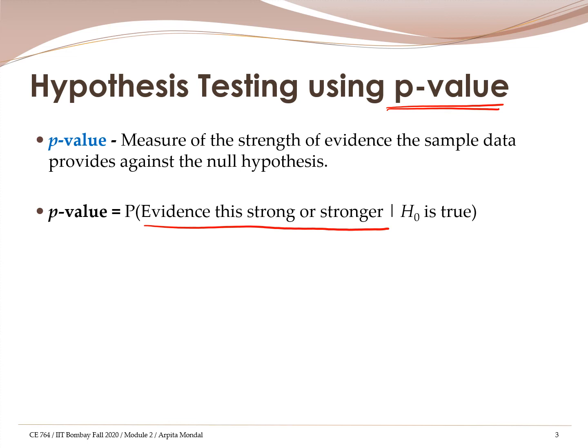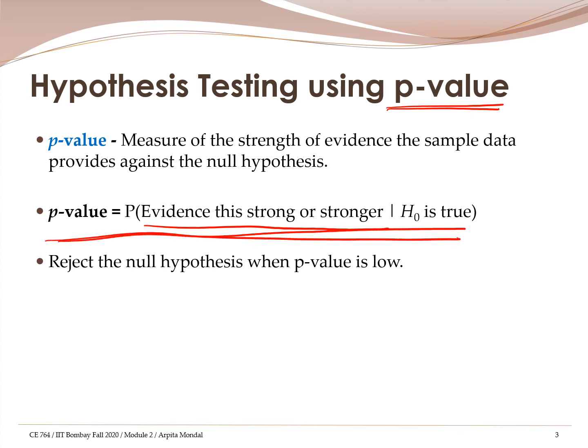Assuming — conditional on the null hypothesis being true — what is the probability of observing data as extreme as you have observed? That is the definition of p-value. We are trying to see if we have evidence to reject the null hypothesis or not. Should you reject the null hypothesis for a large p-value or a small p-value? The answer is: reject the null hypothesis when the p-value is low. This is intuitive because the p-value tells us how likely it is to observe data like ours if the null hypothesis is true.